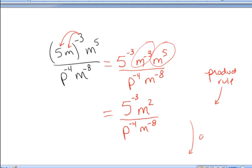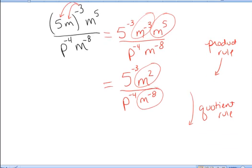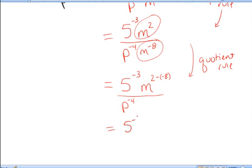I'm now going to apply the quotient rule. I have exponential expressions with the same base being divided: m squared over m to the negative 8th, so I need to subtract exponents. 5 to the negative 3 remains in the numerator, p to the negative 4 remains in the denominator. But now m raised to the 2nd divided by m raised to the negative 8 leaves m raised to the 2 minus negative 8. Simplifying, 2 minus negative 8 is 10, so it's m to the 10th.